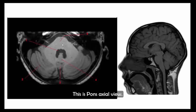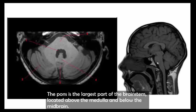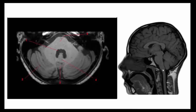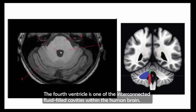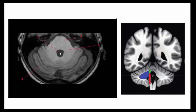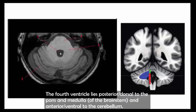This is the pons on axial view and sagittal view. The pons is the largest part of the brainstem, located above the medulla and below the midbrain. The fourth ventricle is one of the interconnected fluid-filled cavities within the human brain. These cavities and their content constitute the ventricular system of the brain. The fourth ventricle lies posterior to the pons and medulla, anterior to the cerebellum.